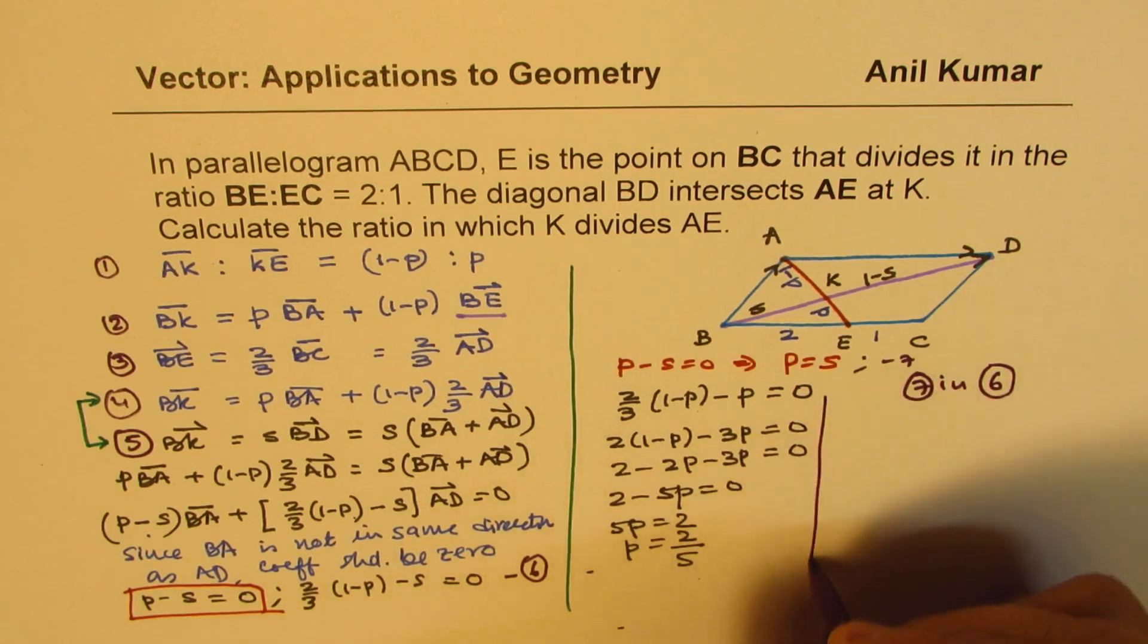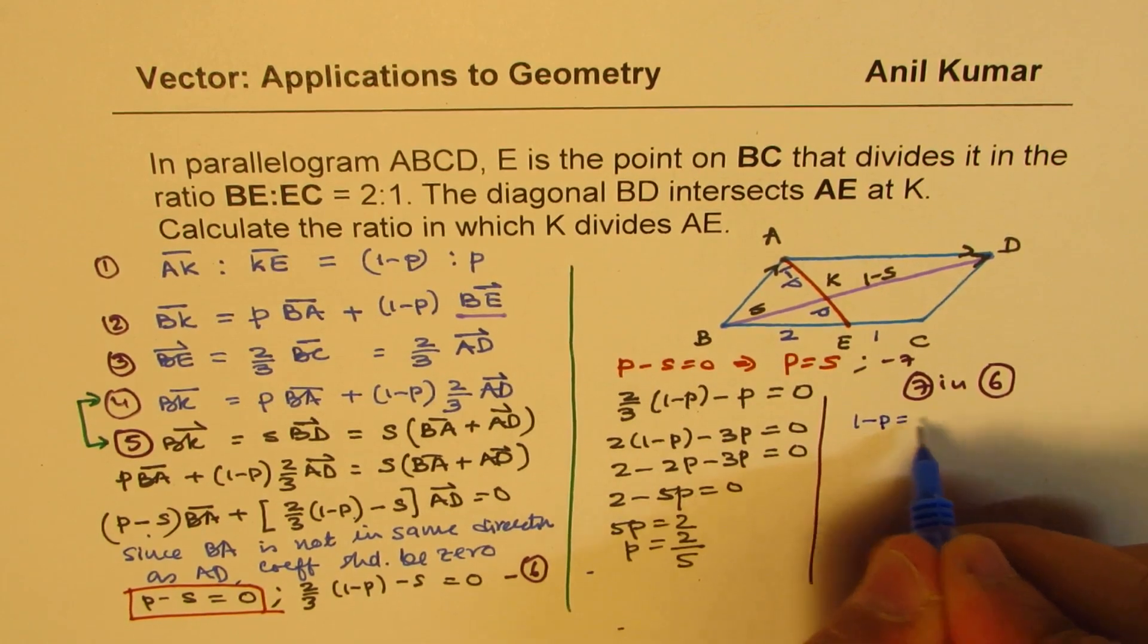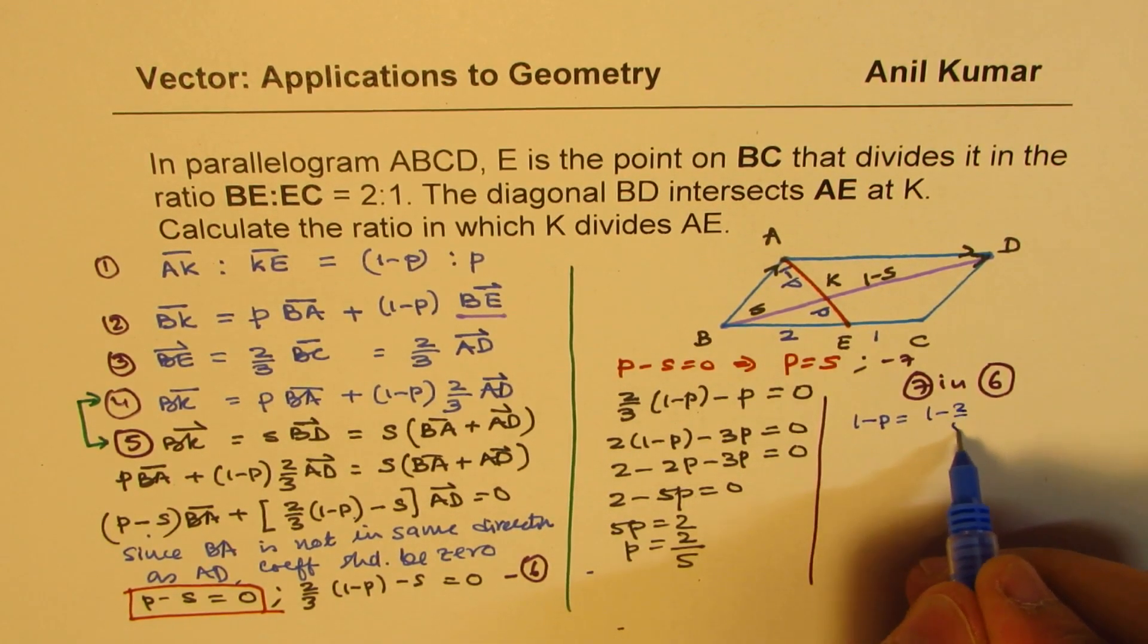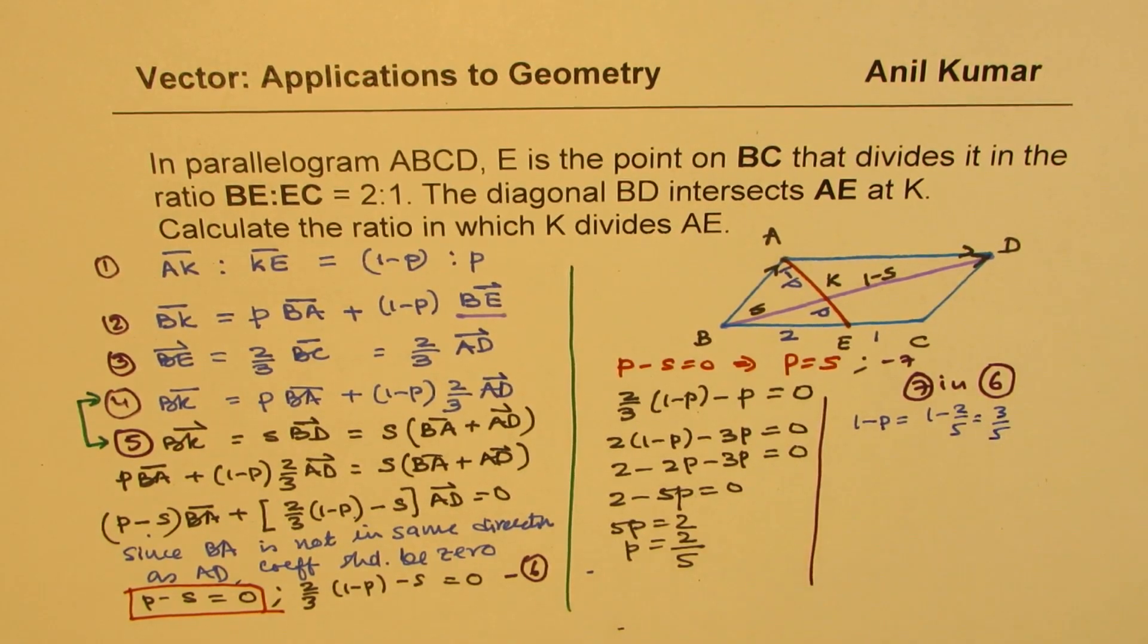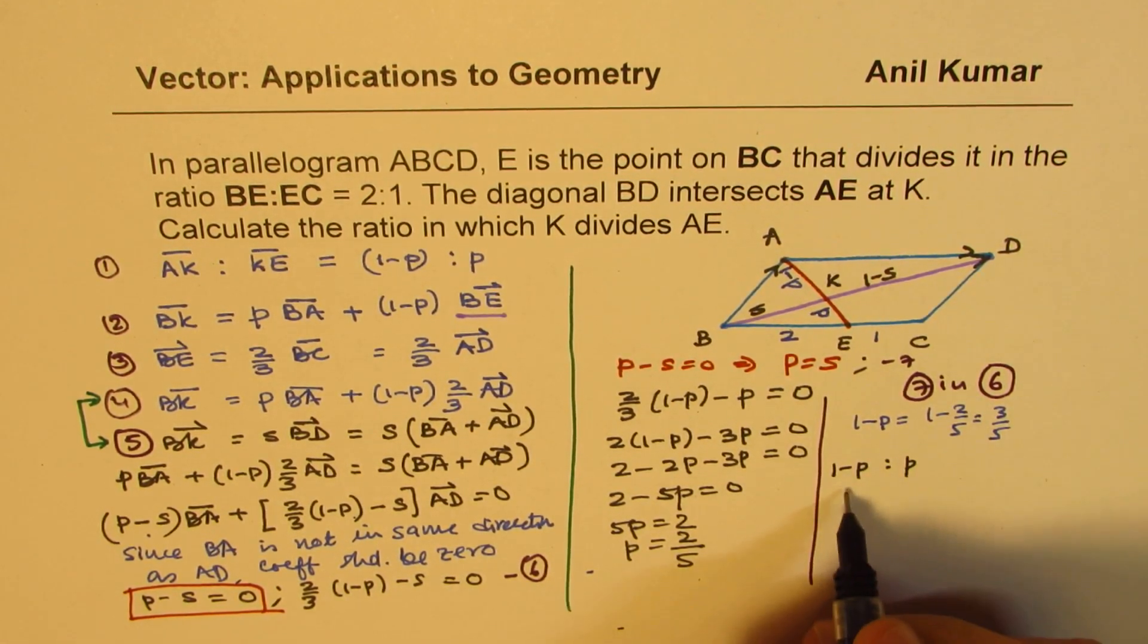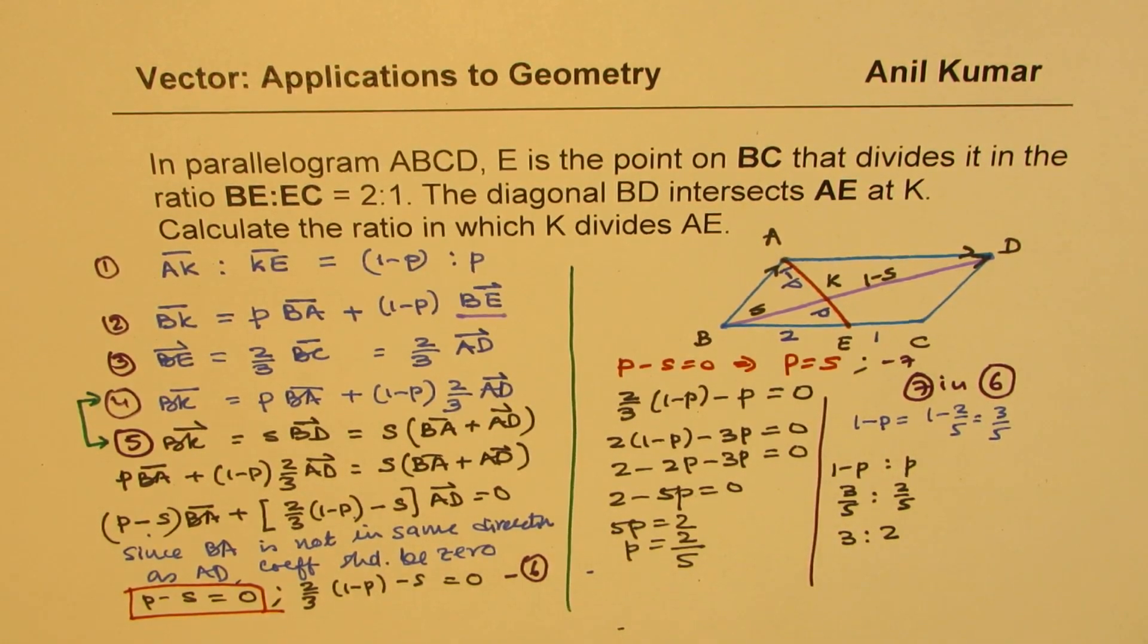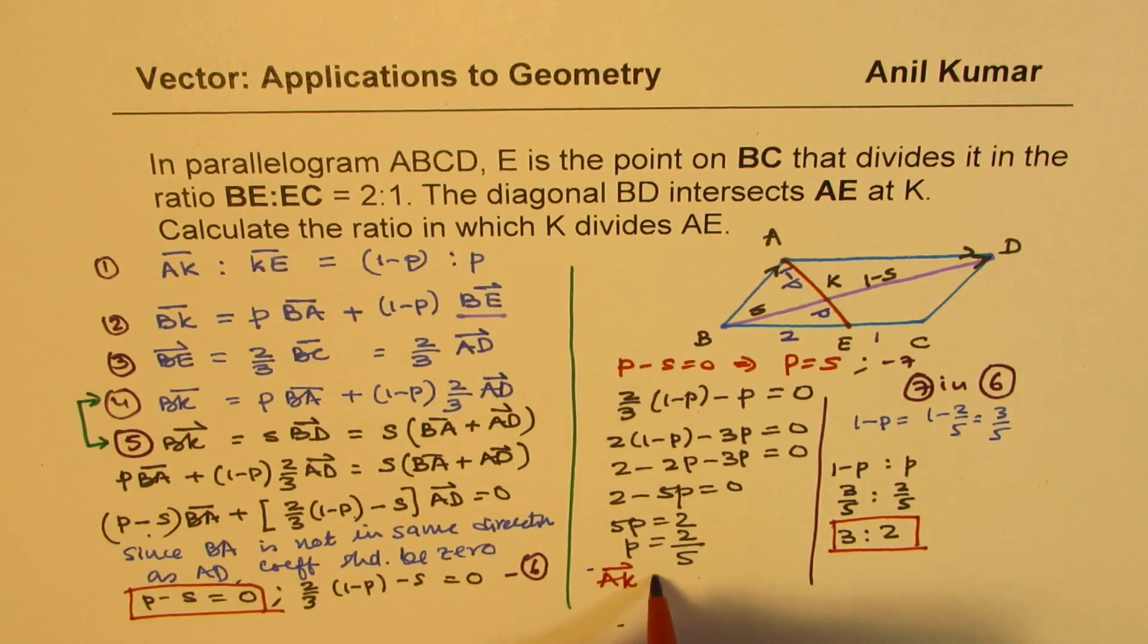So 1-P = 1-2/5 = 3/5. So we get our ratio now. That means the ratio (1-P):P = (3/5):(2/5) = 3:2. So the ratio in which it divides is 3:2. Perfect. So now we know that AK:KE = 3:2.